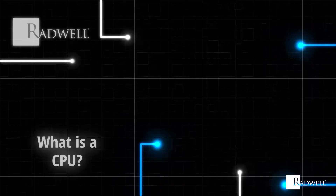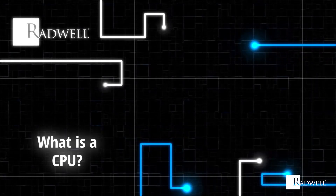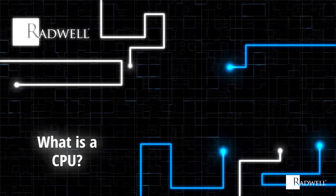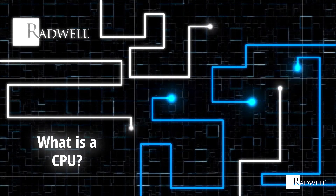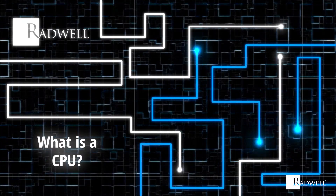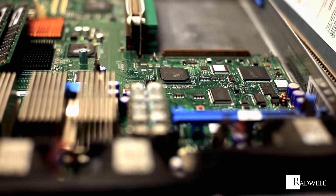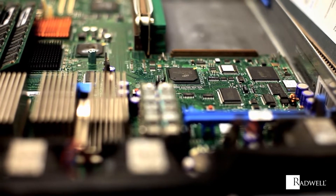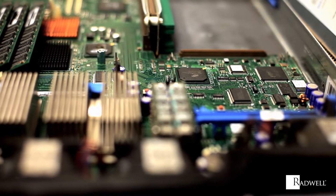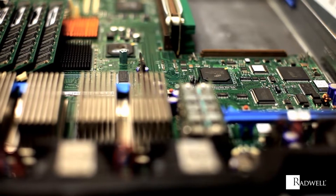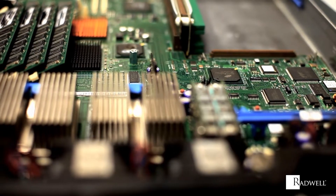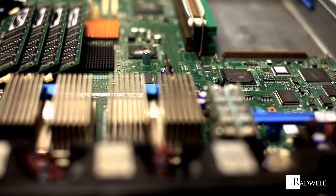What is a CPU? A central processing unit, or CPU, is the electronic circuitry that performs basic arithmetic, logic, controlling, and input-output operations specified by a computer program.